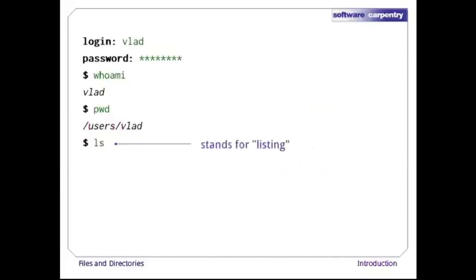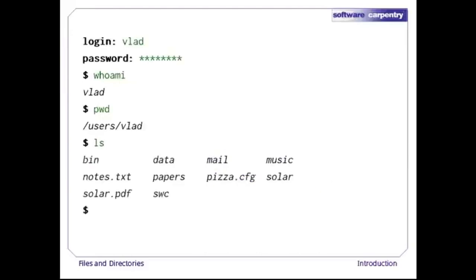Let's see what's inside vlad's home directory by running ls, which stands for listing. It's not a particularly memorable name, but as we'll see, many others are unfortunately even more cryptic. ls prints the names of all the files and directories in the current directory, in alphabetical order, arranged neatly into columns.